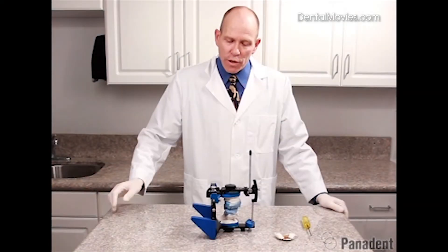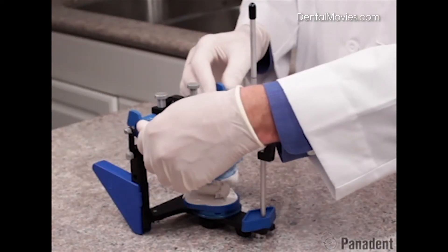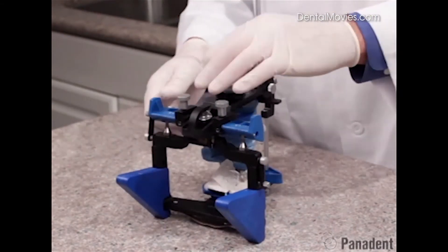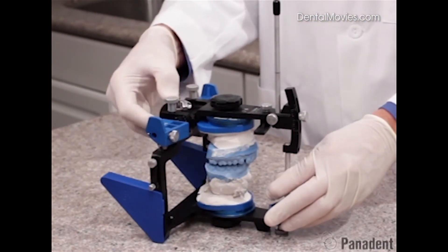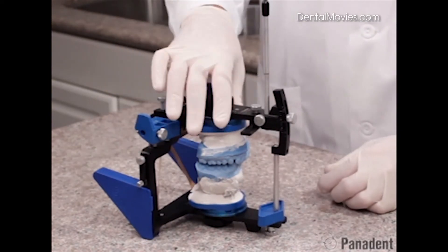We're now ready to set our condylar inclination using our protrusive check bite. In preparation for that, we do want to loosen the screw here on the analog so we can remove our Dynalink pin and put it in this little storage hole in the lower frame of the articulator. We can also release the centric latch and use the rubber band on the bottom of the articulator to help hold that latch out of our way.